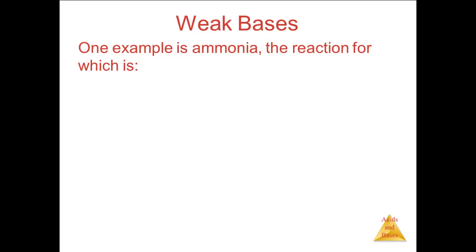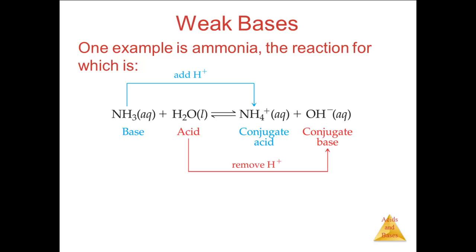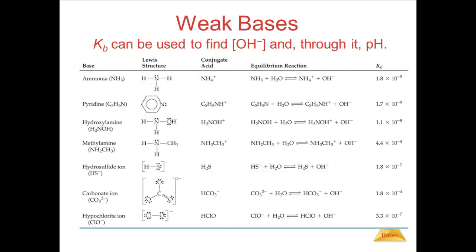One example of a weak base, and one of the most common ones used, is ammonia, the reaction for which is shown here. Notice that the charges for the species are different than the general reaction shows. Notice also that the weak base produces its conjugate acid in the reaction. The equilibrium expression is KB equals the concentration of NH4+ times the concentration of OH- over the concentration of NH3.